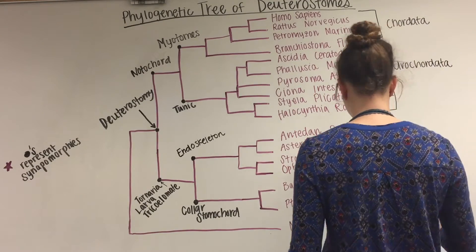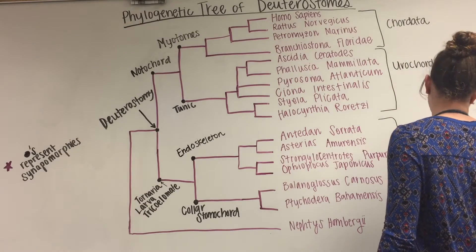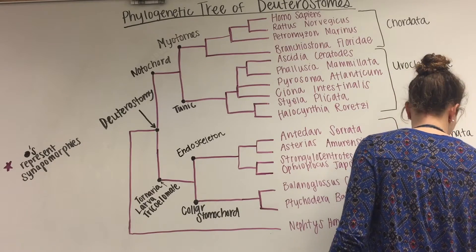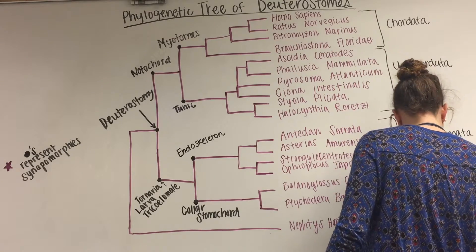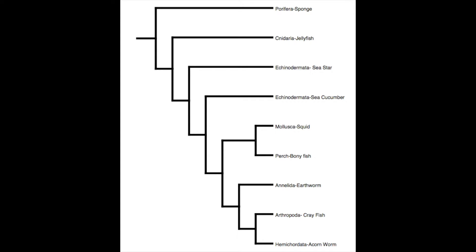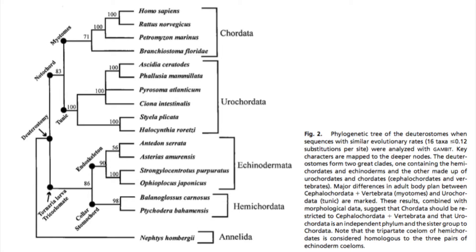In a journal article published in 2000 by researchers Cameron, Gary, and Swalla, a phylogenetic tree of deuterostomes was constructed using the 18S gene. Due to grouping of phyla based on DNA, this tree is more accurate than the data matrix tree we constructed in class. Our data matrix tree shows that hemichordata is not closely related to echinoderms, whereas the 18S tree accurately shows that they are related to echinoderms because both phyla contain similarities in their DNA sequences and share synapomorphies of an endoskeleton and a collar stomochord.